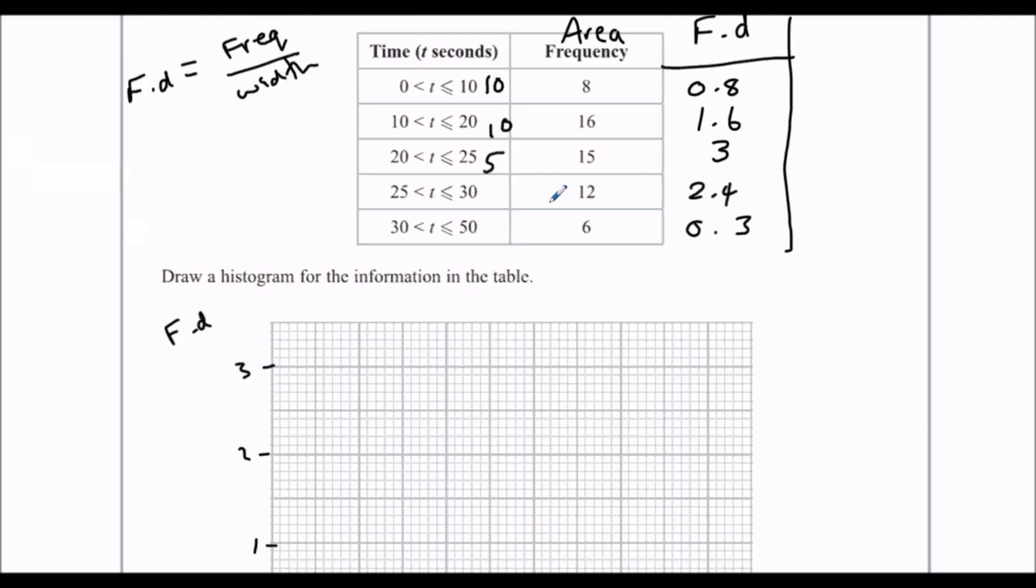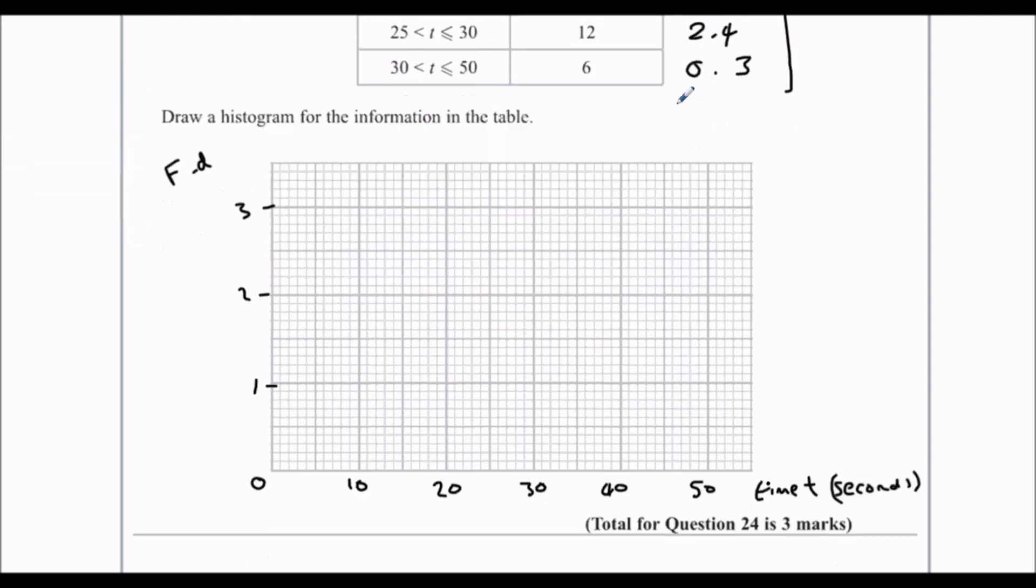And then we just draw on the bars. So the first bar is 0 to 10, and it goes up to 0.8. So 0 to 10, up to 0.8. That's there. I'm going to try and draw it as best as I can freehand. Use a ruler.